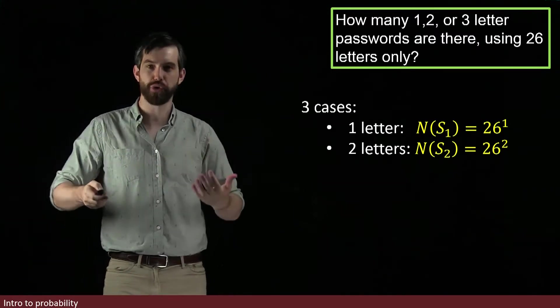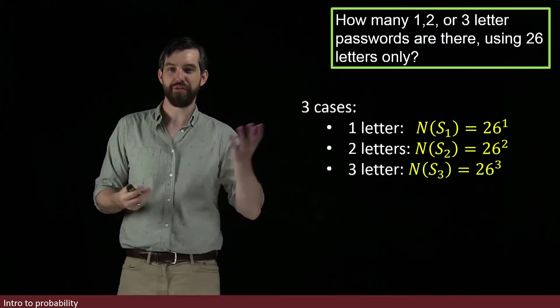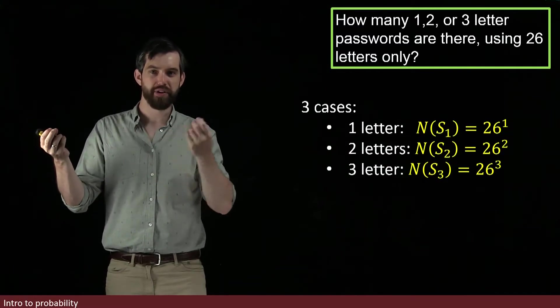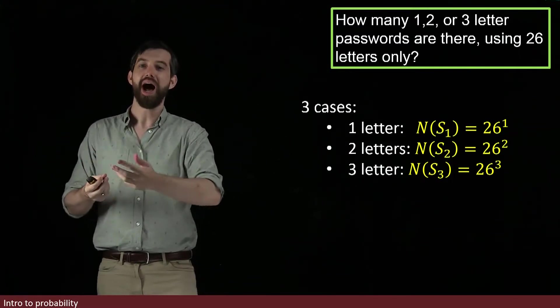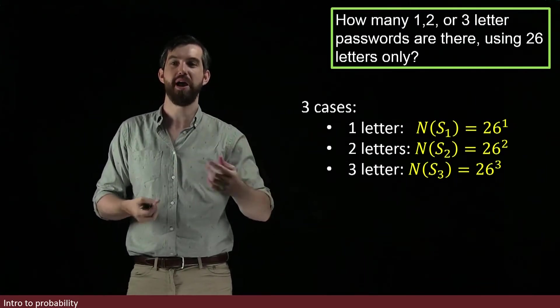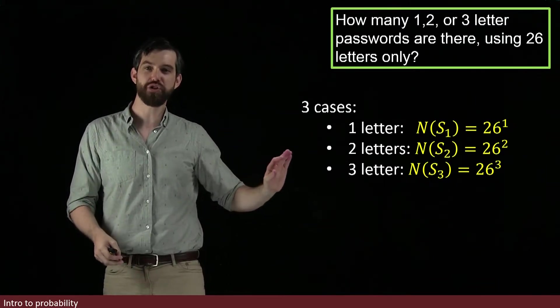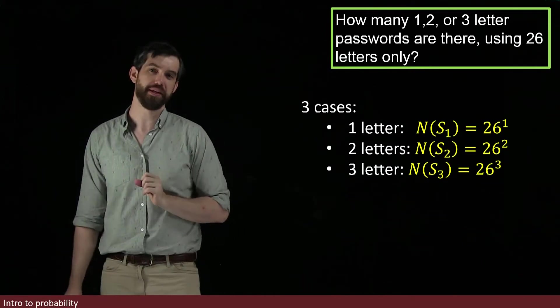And the same is true in the three-letter case. So, I've got three different buckets now. There's 26 in the first, 26 in the second, 26 in the third. I multiply them according to my multiplication rule. And so, I get 26 to the power of three different possibilities.